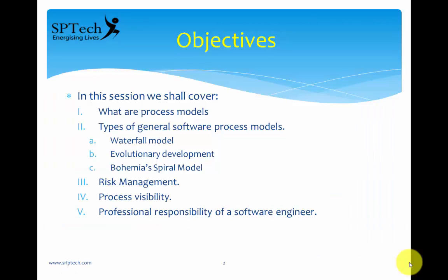What are we going to do in this particular session? We are going to learn about what process models are, and we are also going to discuss some general software process models which could involve the waterfall model, evolutionary development, and spiral model. Later in the session, we will also discuss aspects of risk management, which is one of the most important factors in the software development life cycle, and also process visibility and the professional responsibility of a software engineer.